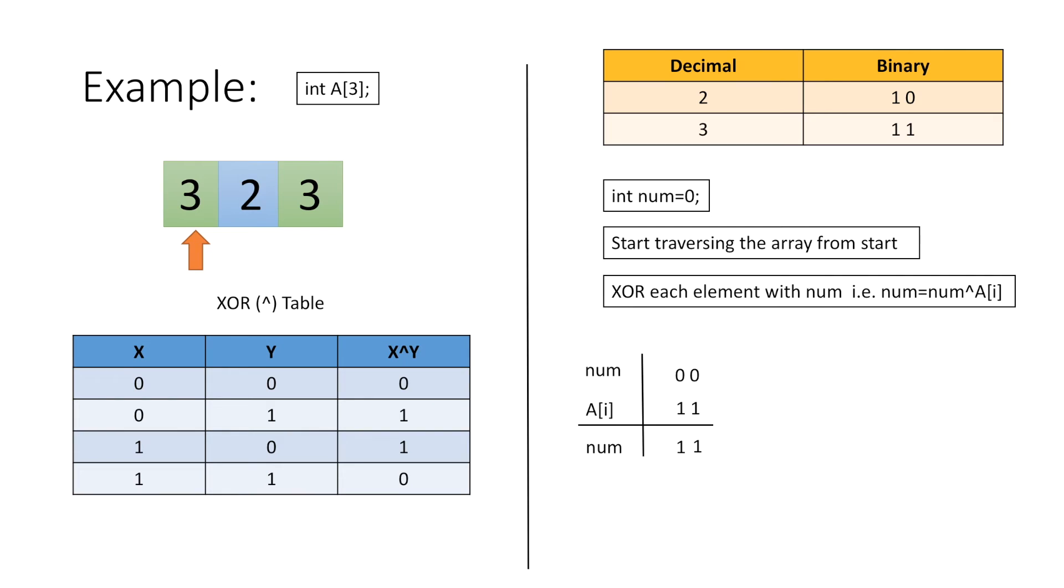Next we again take our variable num and we move forward in our array to the next element which is 2 and is represented as 10 in binary form.